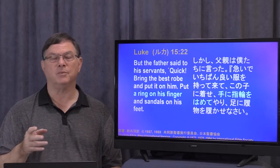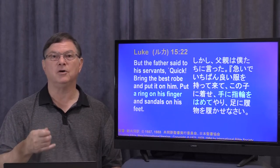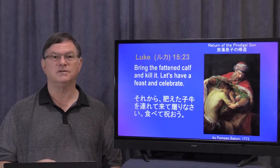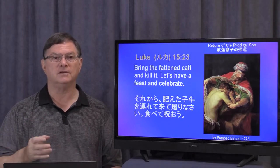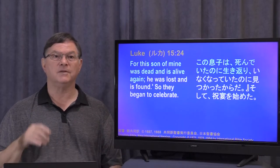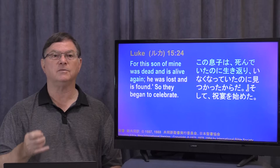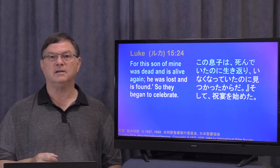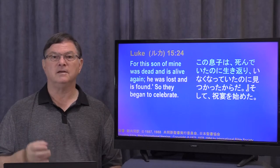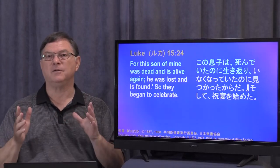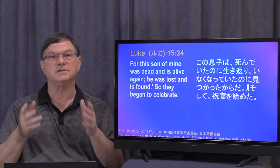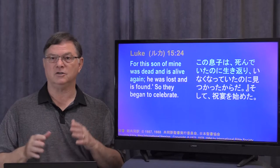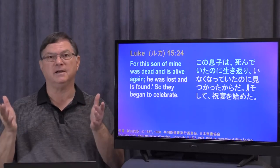By the way, this ring is probably a symbol that he's part of the family and has authority in the home. 'Bring the fattened calf and kill it. Let's have a feast and celebrate. For this son of mine was dead and is alive again. He was lost and is found.' So they began to celebrate. Now, in his sinful, prodigal life, separated from the father, the son was the same as dead. But now he's alive again — it's like a resurrection.